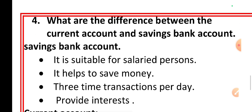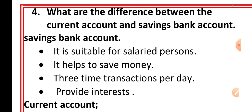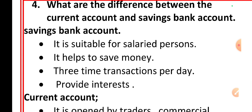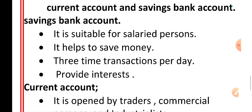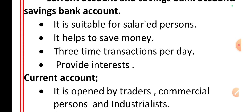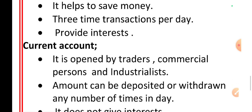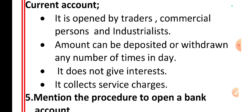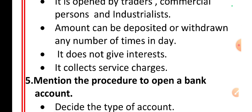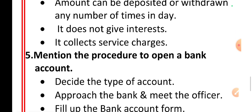What are the differences between current account and saving account? Saving bank account is suitable for a salaried person; it helps to save money, allows three transactions per day, and provides interest. Current account is opened by traders, commercial persons and industrialists. Amount can be deposited and withdrawn any number of times in a day. It does not give interest but collects service charges.